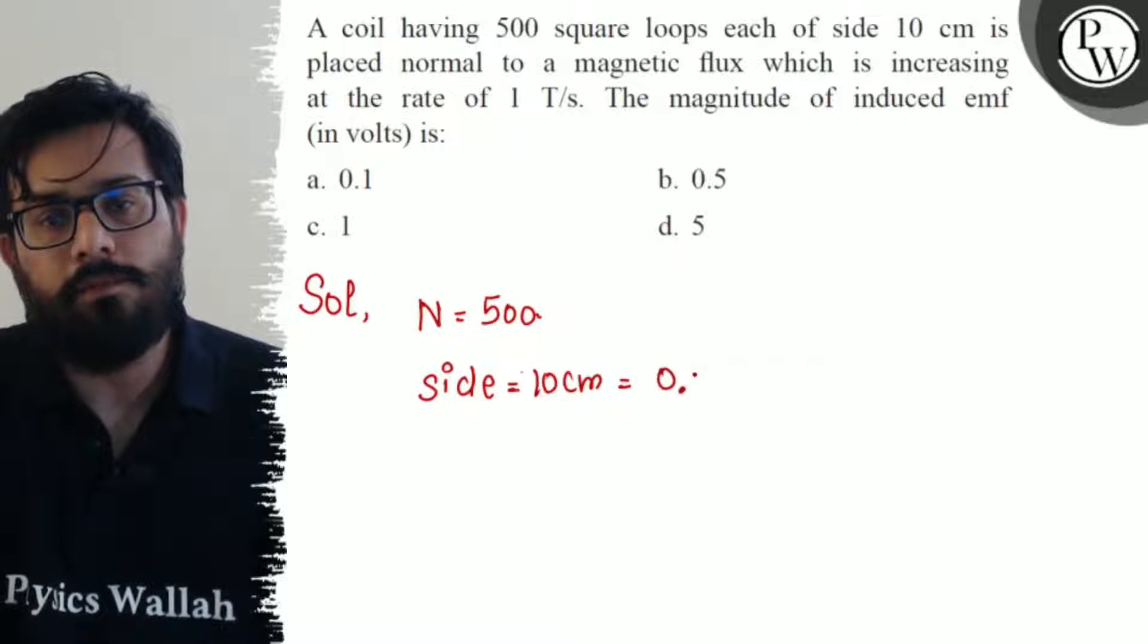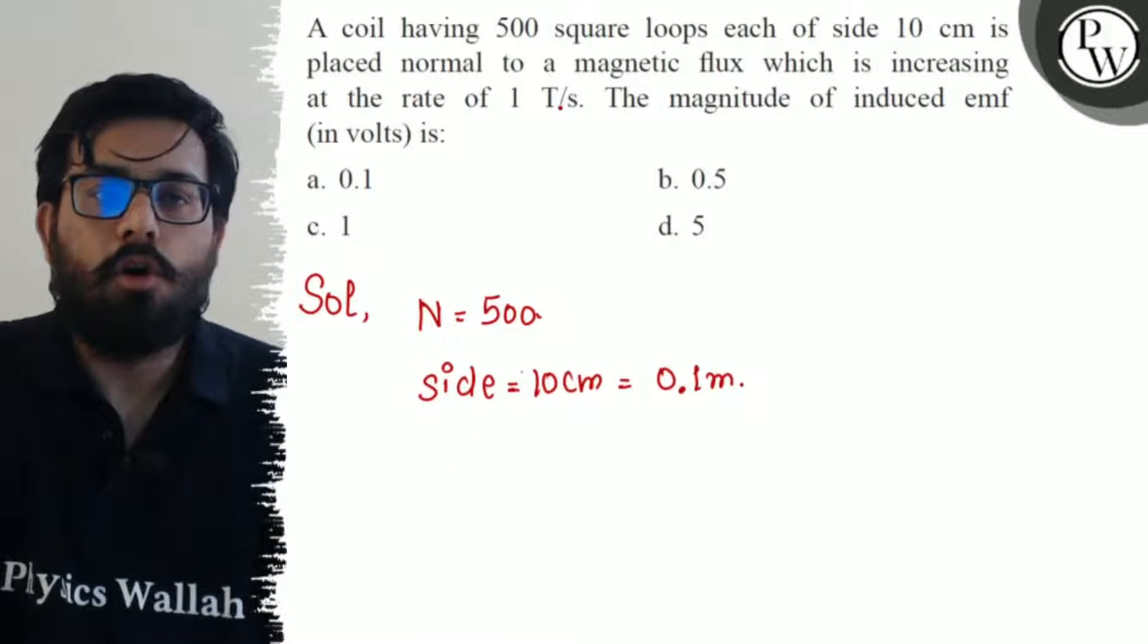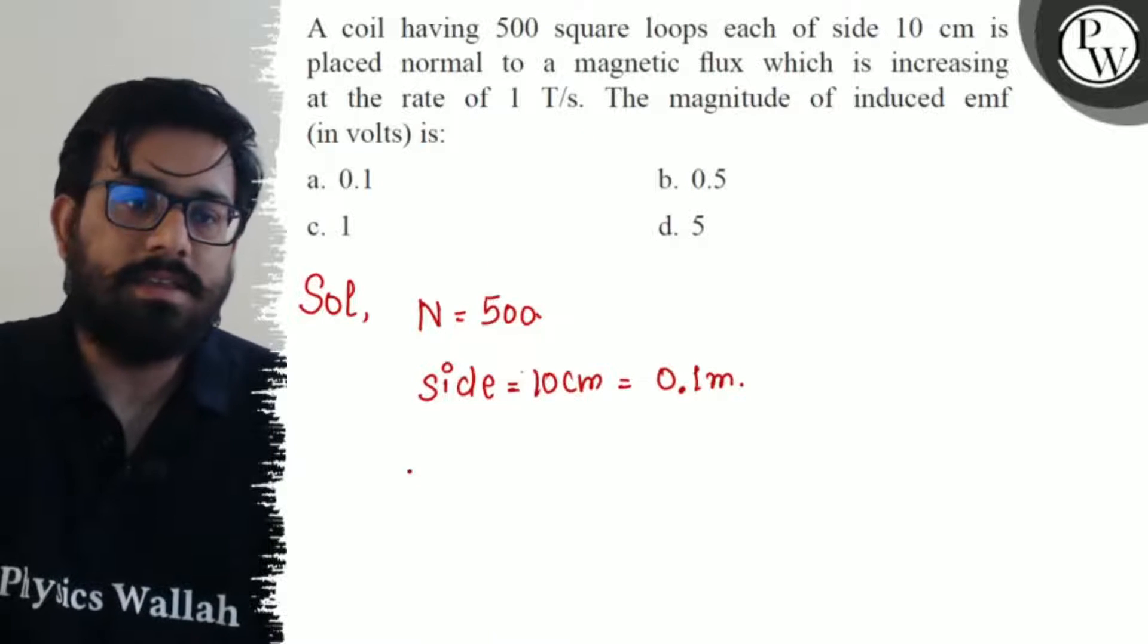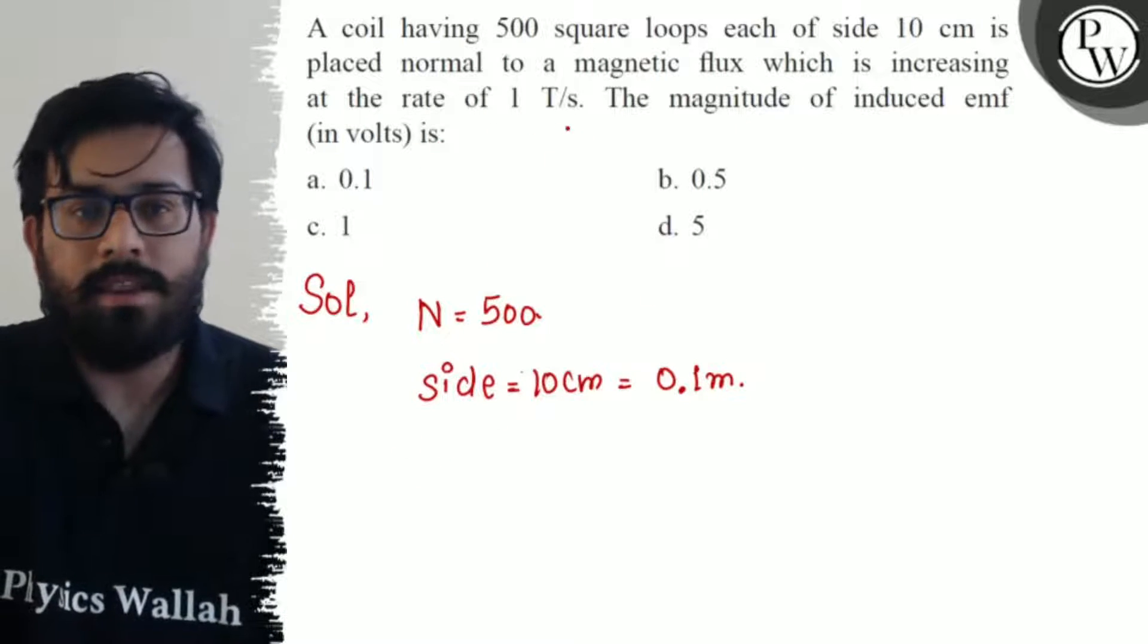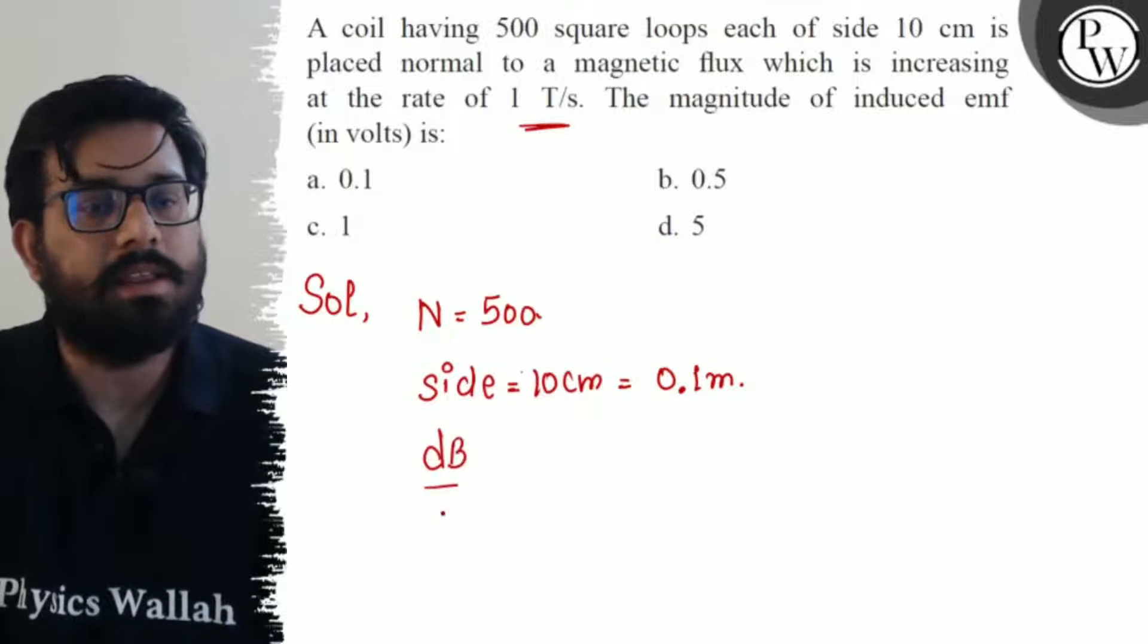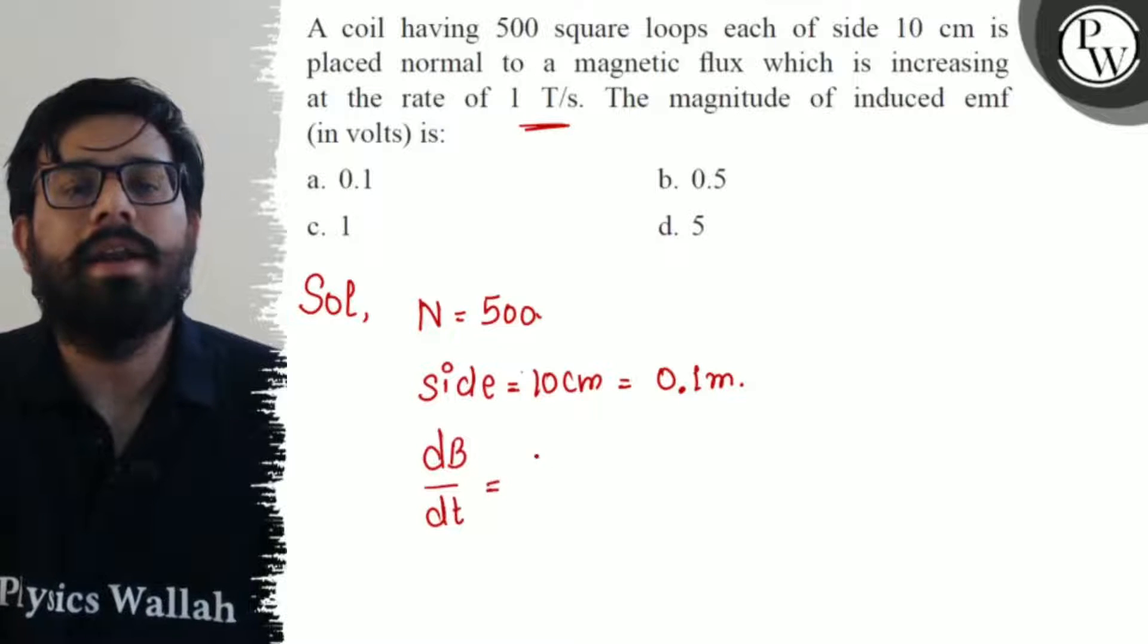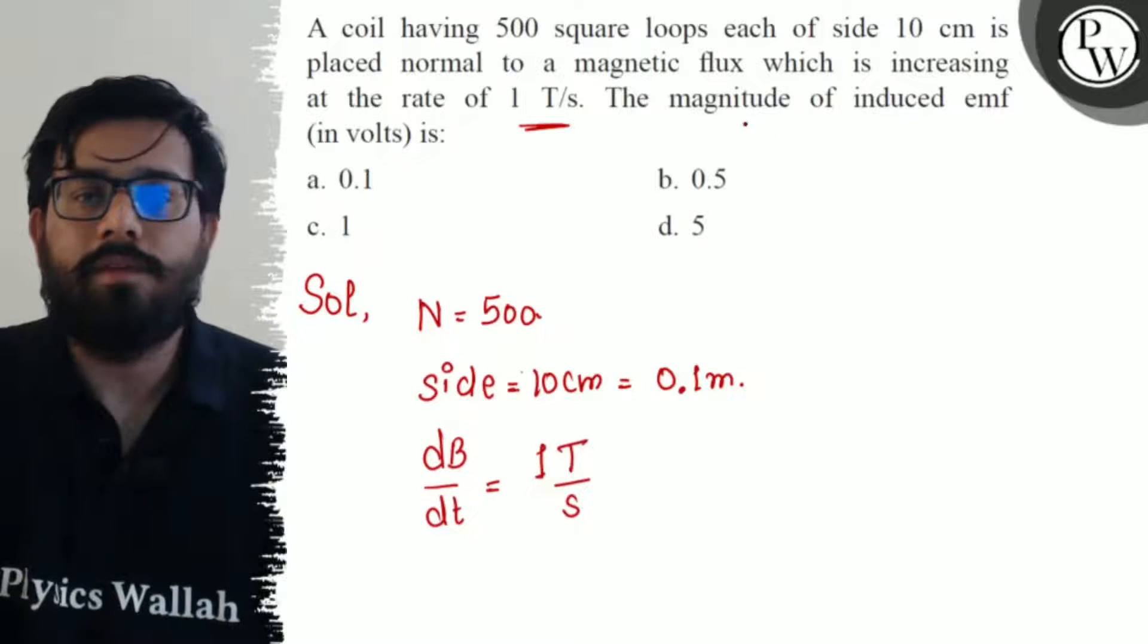The coil is placed normal to a magnetic flux which is increasing. The rate of change of magnetic flux, dB/dt, is given as 1 tesla per second, and we have to calculate the magnitude of induced EMF.